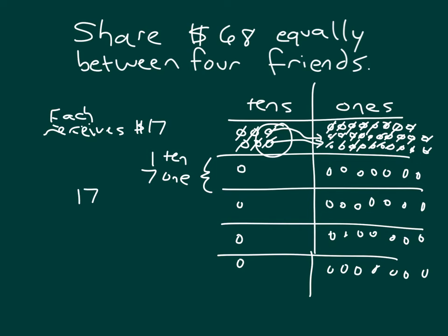Let's run a check. If each person did have 17 dollars, 4 people would have what? Well, it would be 17 dollars times 4. 4 times 7 is 28. So I place an 8 and regroup a 2. 4 times 1 is 4, plus 2 is 6. So that's the $68 that I had started with, that I was sharing between 4 friends.